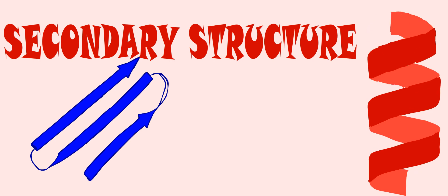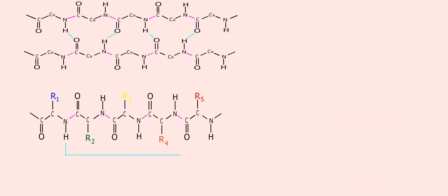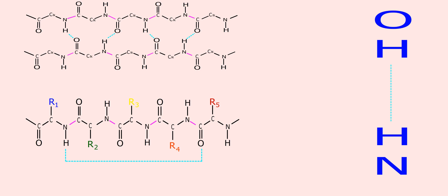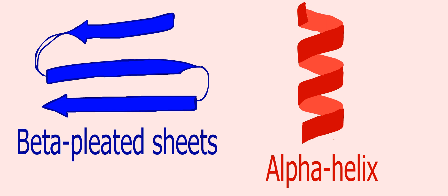Secondary structure of protein. Secondary protein structure is the repetitive folding of polypeptide chains by hydrogen bonds between the hydroxyl group and the hydrogen molecule of the adjacent amino acid, leading to the unique shape of the protein. The most common examples are alpha helix and beta pleated sheets.